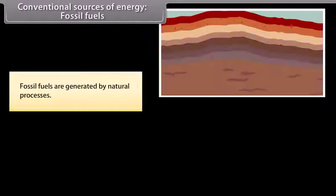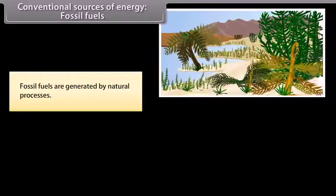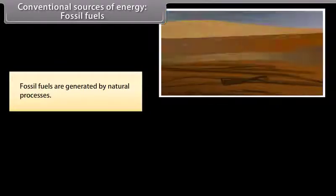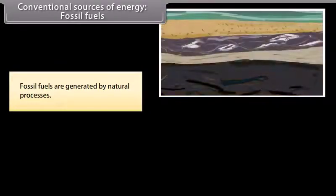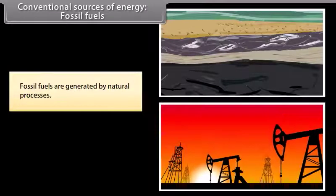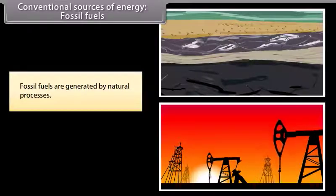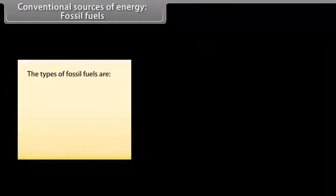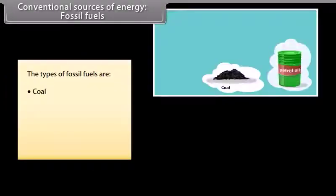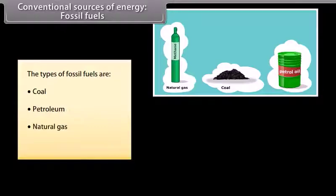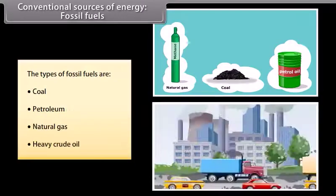Conventional sources of energy: Fossil fuels. Fossil fuels are generated by natural processes. They include a high percentage of carbon. These are non-renewable sources of energy as they take millions of years to form. The reserves of these fuels are reducing at an alarming rate. The types of fossil fuels are coal, petroleum, natural gas, and heavy crude oil.